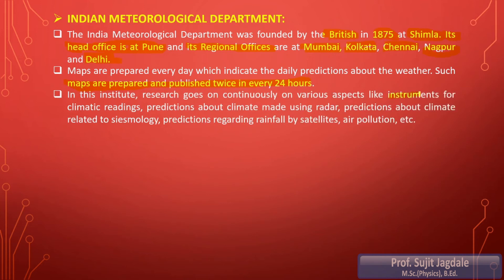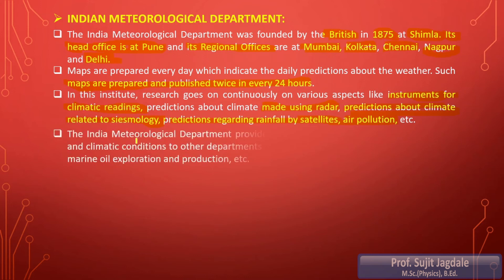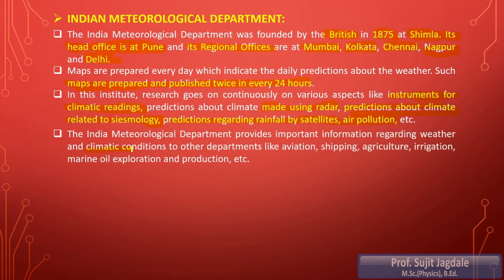In this institute, research goes on continuously on various aspects: instruments for climate readings, predictions about climate made using radar, predictions related to seismology, predictions regarding rainfall by satellites, and the amount of air pollution. Research is continuously ongoing to improve technology. The IMD also provides important information regarding weather and climatic conditions to aviation — both civilian and defense aircraft — and shipping.